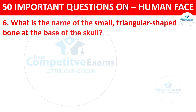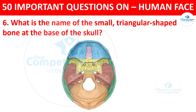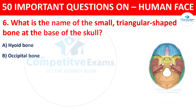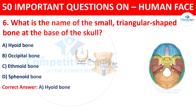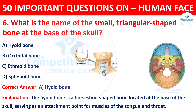Question number six: what is the name of the small horseshoe-shaped bone at the base of the skull? The correct answer is A, hyoid bone. The hyoid bone is a horseshoe-shaped bone located at the base of the skull, serving as an attachment point for muscles of the tongue and throat.